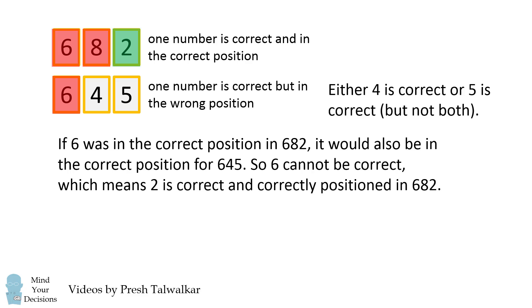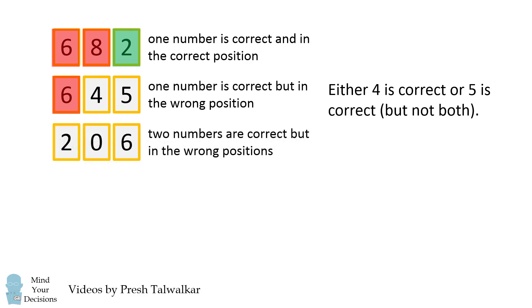Now, from the second clue, we know that 6 is not a correct number, and we know one number is correct. So, either 4 is correct, or 5 is correct, but not both. Now, we go to the third clue. We know 6 is not a correct number, and we have two correct numbers. So, that means both 2 and 0 are correct numbers, but they're in the wrong positions.